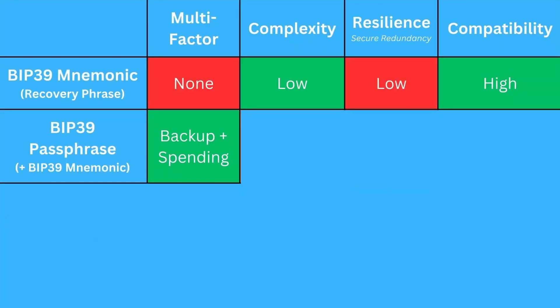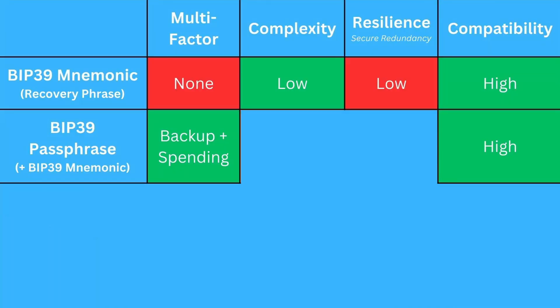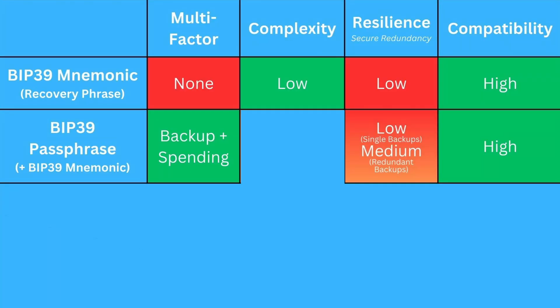The next thing I want to talk about is BIP39 passphrases. They are really powerful — they not only give you a multi-factor backup, so someone would need both your recovery seed and your passphrase to regain access to funds, but most wallets also require you to enter the passphrase when you sign a transaction. A big advantage is very high compatibility, supported by a wide range of wallets. You can also add a BIP39 passphrase to an existing standard mnemonic-based seed without having to generate a new seed and redo all those backups. You can even have multiple passphrases.